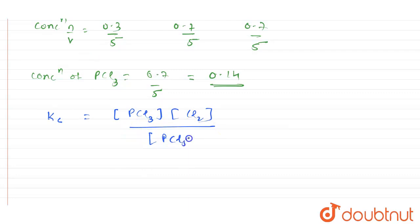When you do this, the concentration of PCl3 you have as 0.7 divided by 5, and this again 0.7 divided by 5. This will be divided by 0.3 divided by 5.